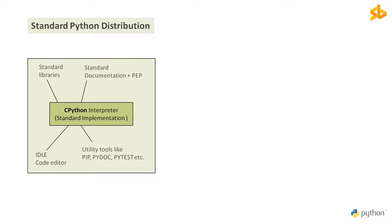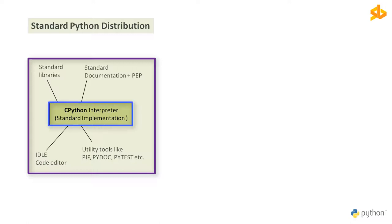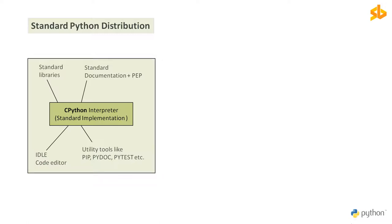To summarize: the standard Python distribution is a bundle of components that provide us a Python runtime environment in which we can run our Python programs. The heart and core of which is the standard Python implementation — the CPython interpreter — which we can install from Python Software Foundation's official website python.org, and that's what we will do in the next video. For people who want more or something different, there are alternative Python distributions offered by third-party individuals and organizations.